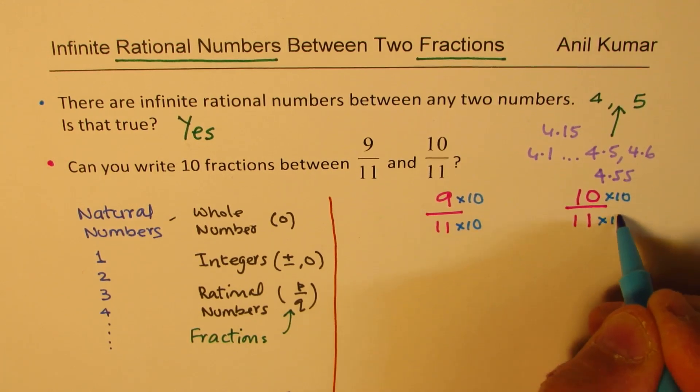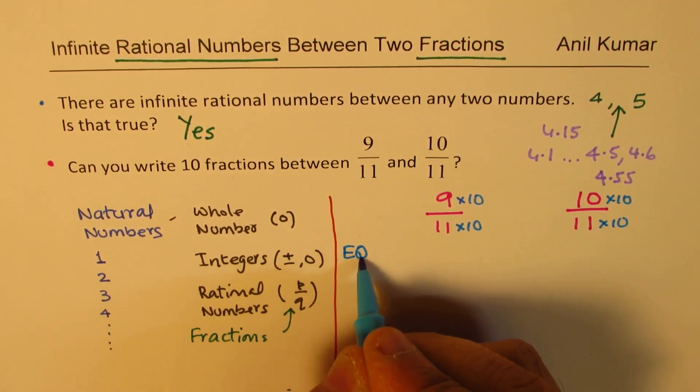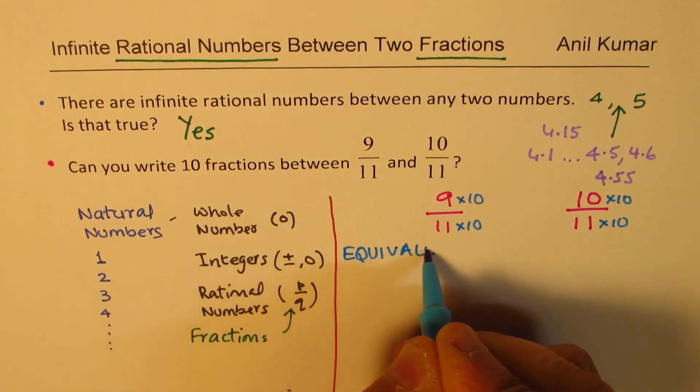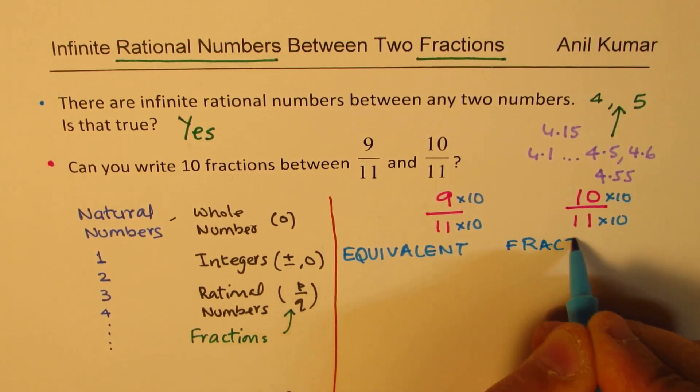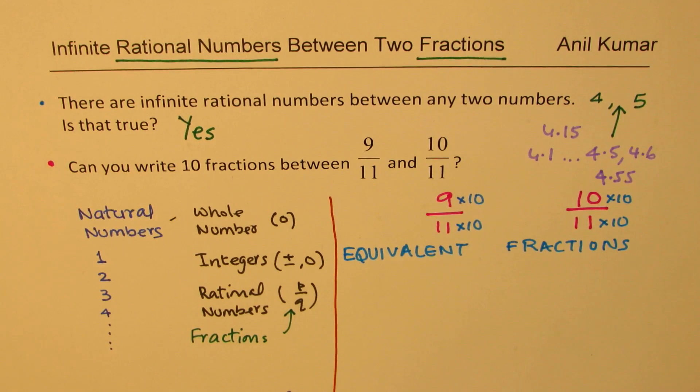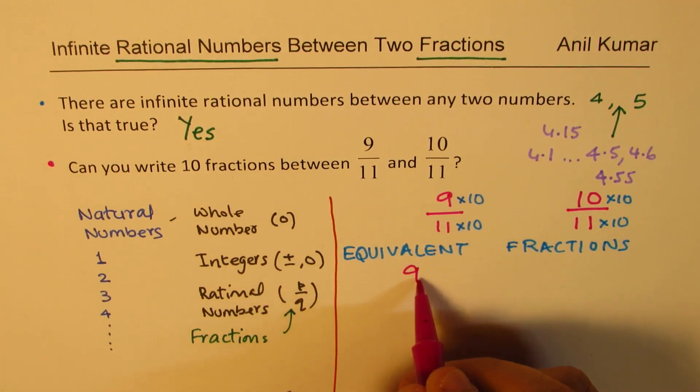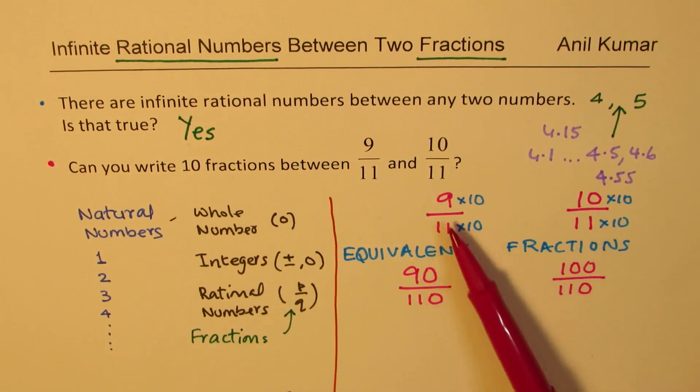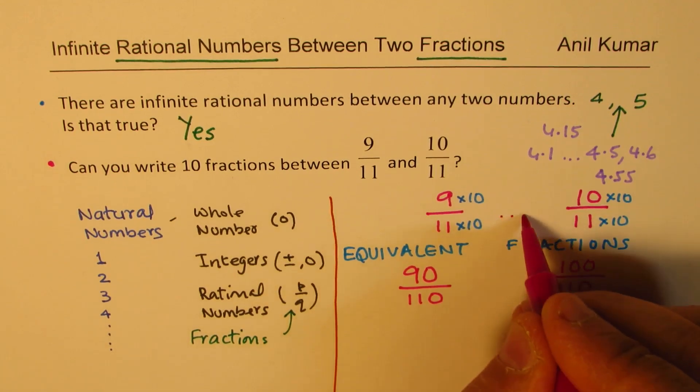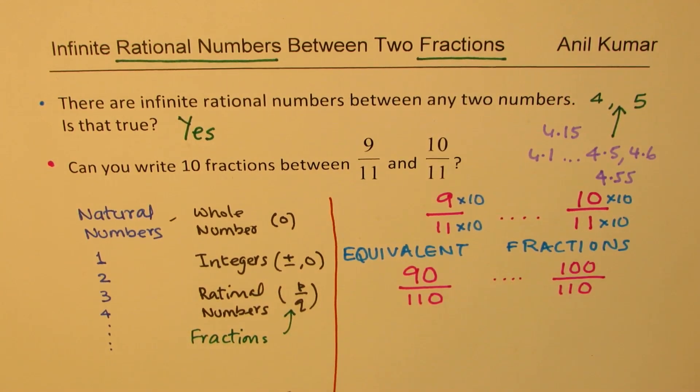So, then what do I get? I get equivalent fractions. So, what fractions do I get now? Well, now I get 90 over 110 and here I get 100 over 110. Wow. Now, these are equivalent. So, in between now, I can easily place 10 numbers. If not 10, at least 9, correct?